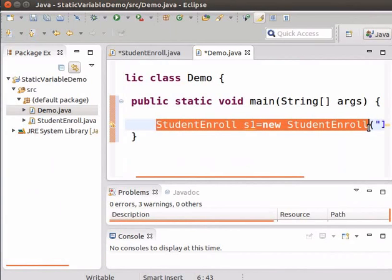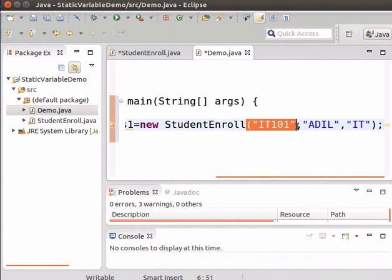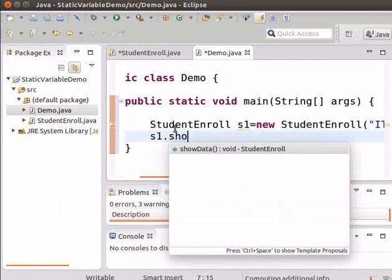So type the following code: StudentEnroll s1 equals new StudentEnroll. Now we can pass the values of different arguments. Within brackets type id101 as id, ideal as name and id as branch. Now let us invoke the showData method to print the enrollment details. So type s1.showData.